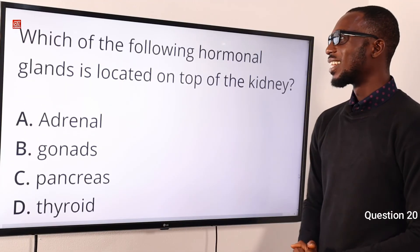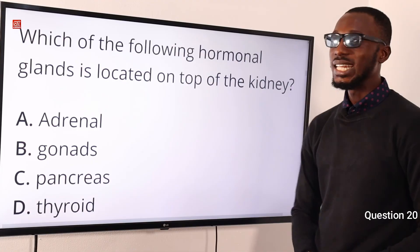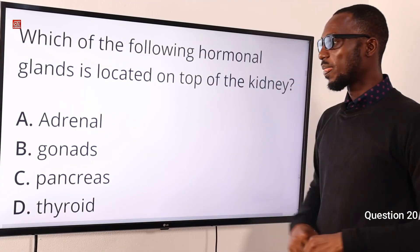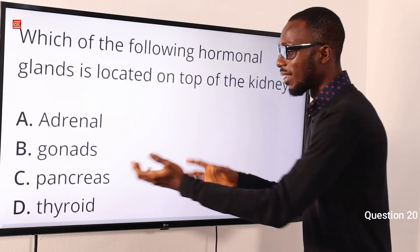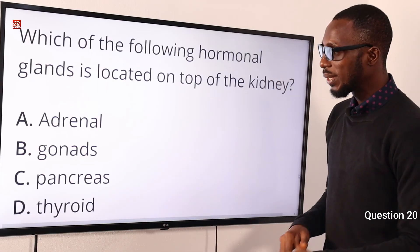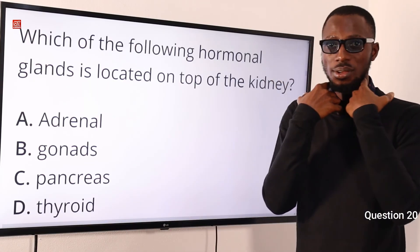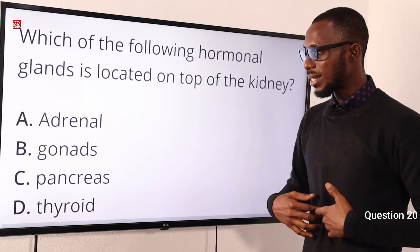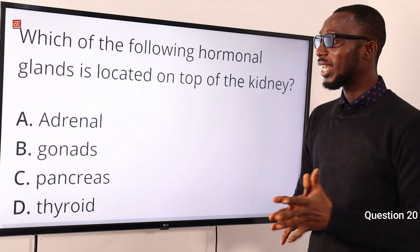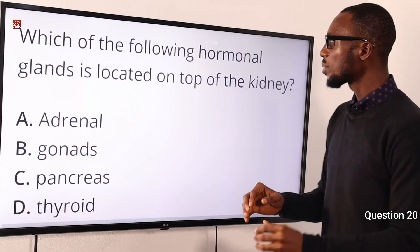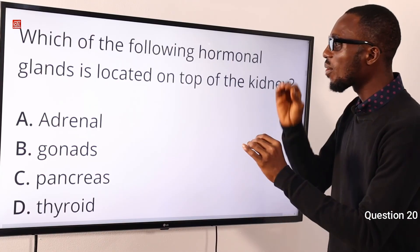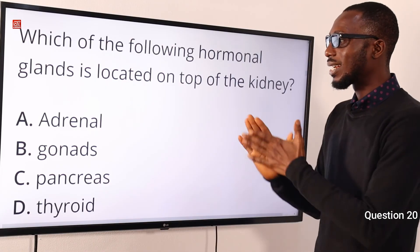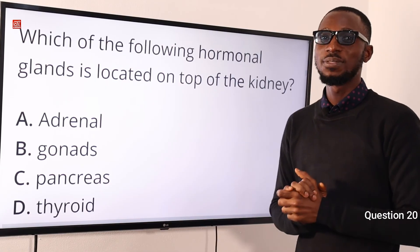Question 20. Which of the following hormonal glands is located on top of the kidney? That is the adrenal gland. Running through the options: thyroid gland, pancreas — and the correct option is option A for the adrenal gland. Which of the following hormonal glands is located on top of the kidney — take note — that is the adrenal gland. Option A is very correct.